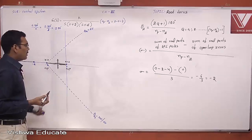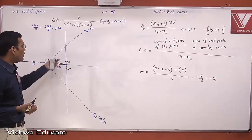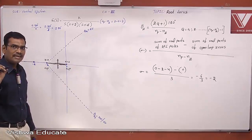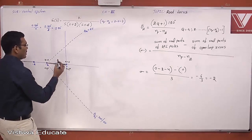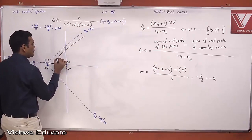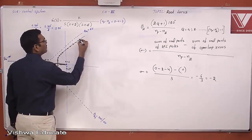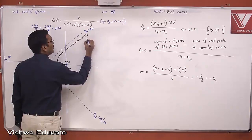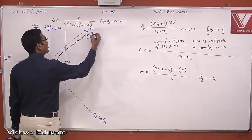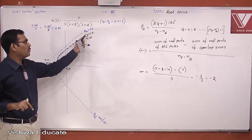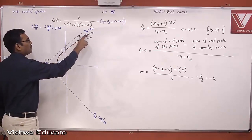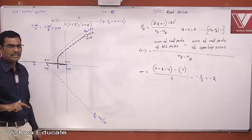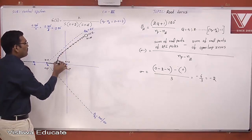After leaving at ±90°, the closed loop pole follows the direction given by the angle of asymptote. As K increases, the closed loop pole moves in the 60° direction and terminates at an open loop zero at infinity. This forms one complete root locus branch — starts at a pole, ends at a zero.